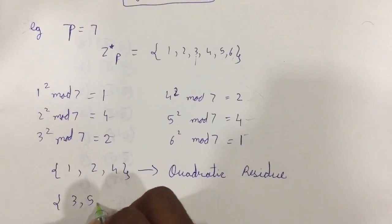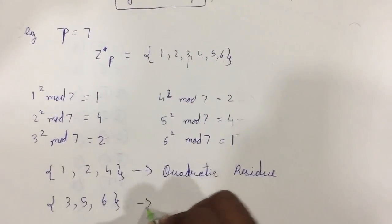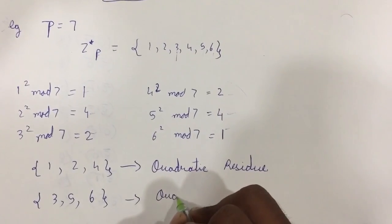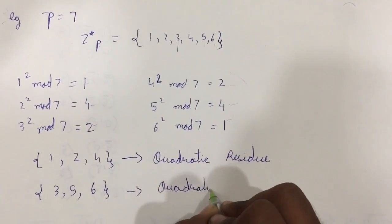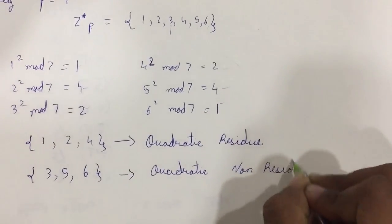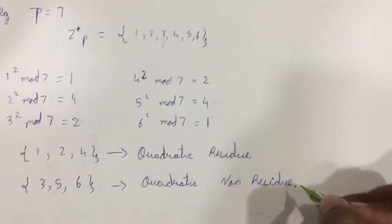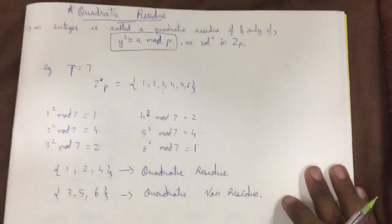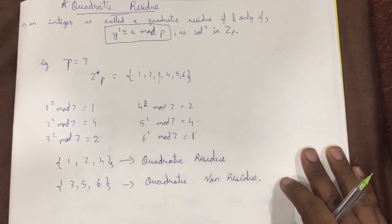Alright, so this was a very simple method called quadratic residue. Thank you.